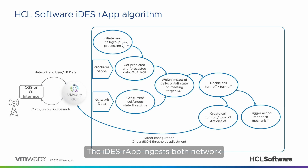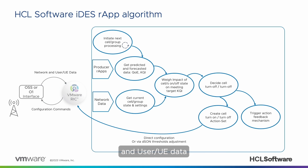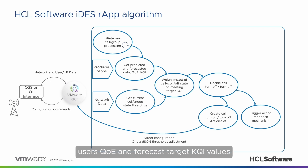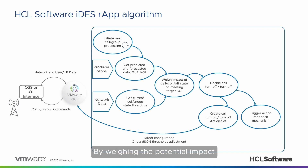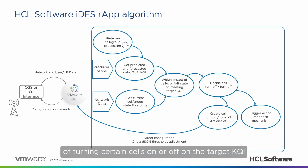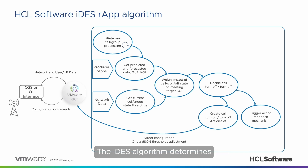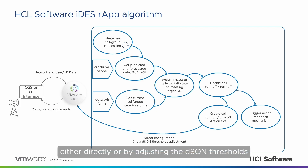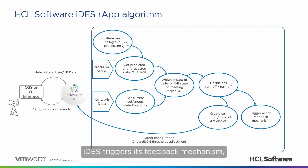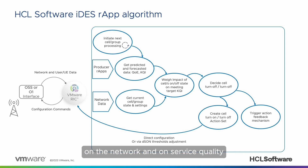The IDES R-App ingests both network and user UE data through the VMware Centralized RIC and proceeds to predict users' QoE and forecast target KQI values. By weighing the potential impact of turning certain cells on or off on the target KQI, the IDES algorithm determines whether to activate or deactivate the cell and creates actions to configure the cell, either directly or by adjusting the DSON thresholds. At the same time, IDES triggers its feedback mechanism, which monitors the impact of the action on the network and on service quality.